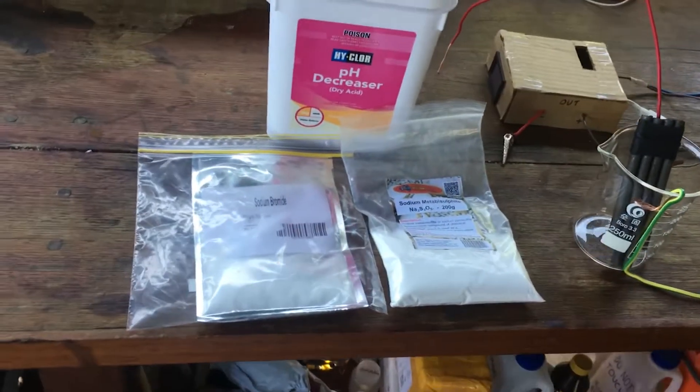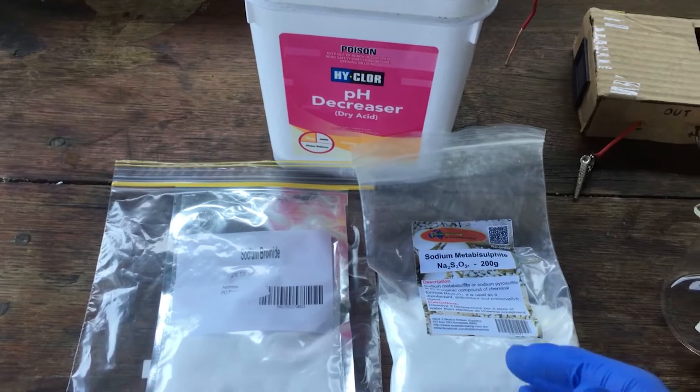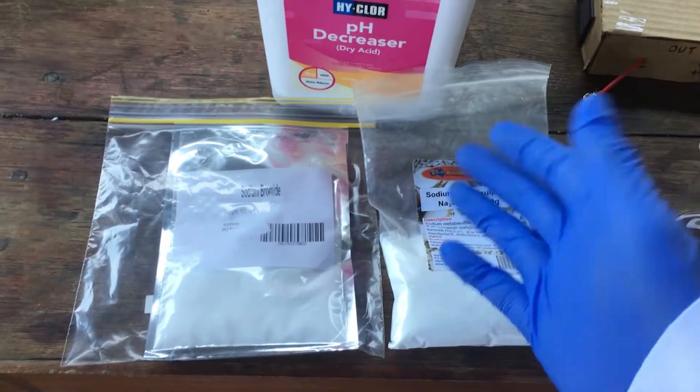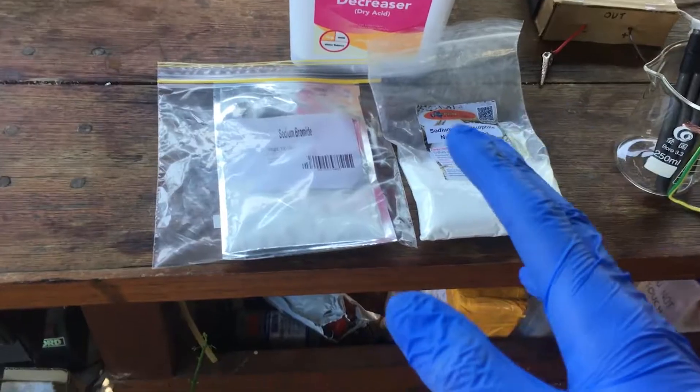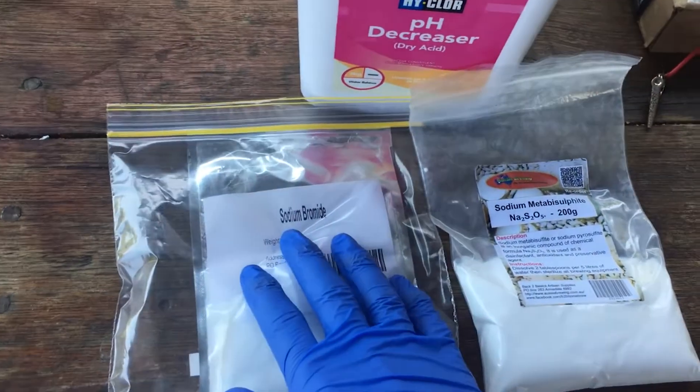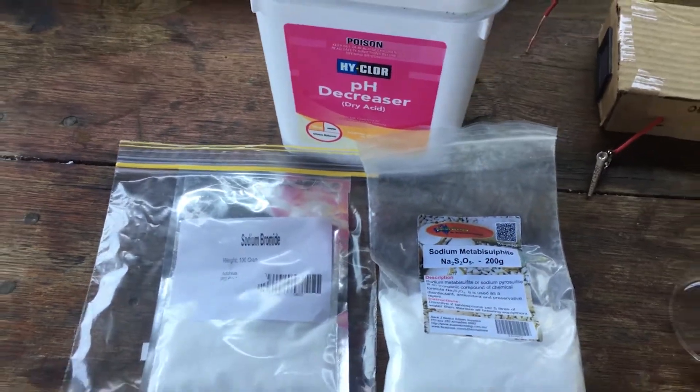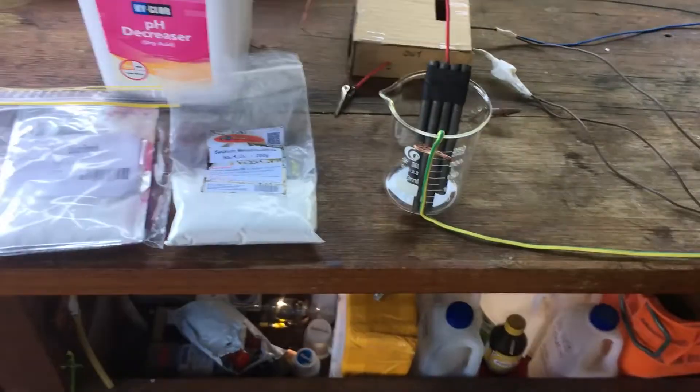This method that we're going to use to generate our elemental bromine is the electrolysis, like everything else on this channel, of sodium bromide. It's a little bit more complicated than just electrolyzing a solution of sodium bromide, but we'll get to that in a minute.